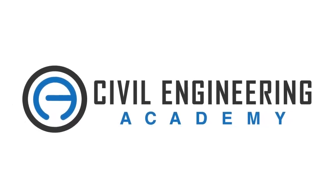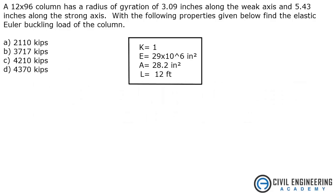Welcome to Civil Engineering Academy. Today we're solving a problem from structures. The problem states a W12 by 96 column has a radius of gyration of 3.09 inches along the weak axis and 5.43 inches along the strong axis. With the following properties given below, find the elastic buckling load of the column — that is, the Euler buckling load.